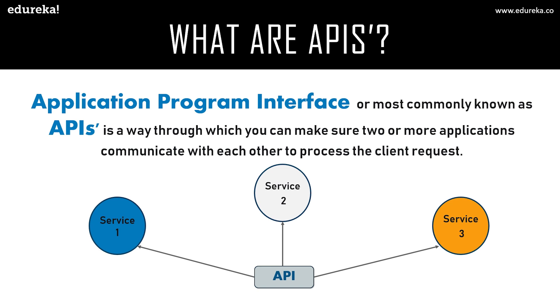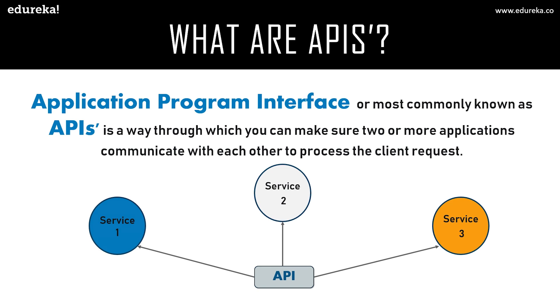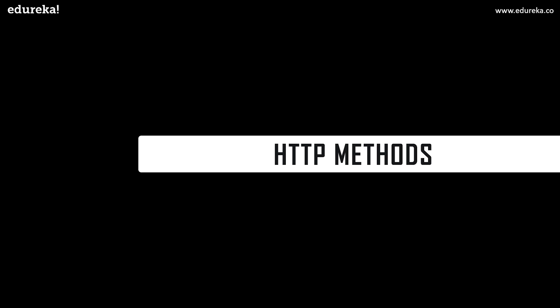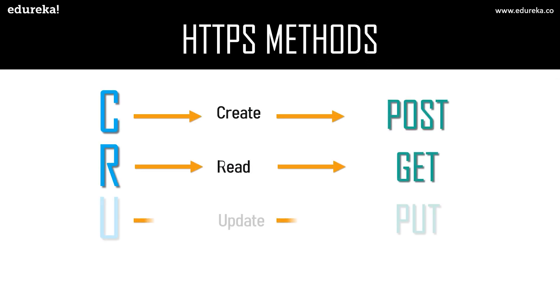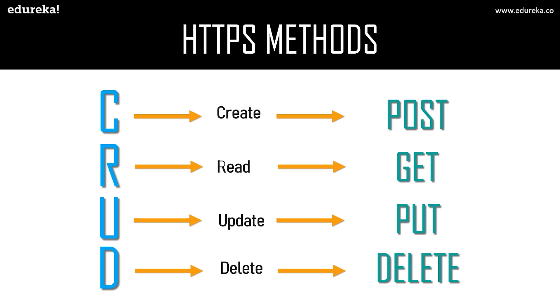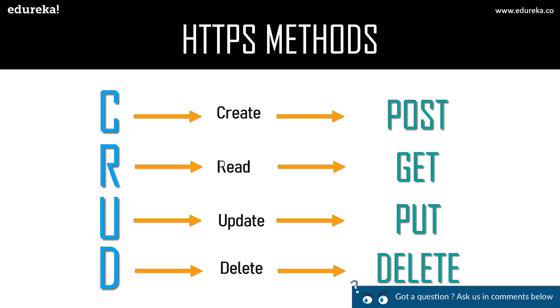Whenever we send a request, we're sending an HTTP request using HTTP methods. The HTTP methods are: POST to create a resource, GET to read a resource, PUT to update a resource, and DELETE to delete a resource. APIs use these methods to communicate between the client and the respective functionality or feature of the application.